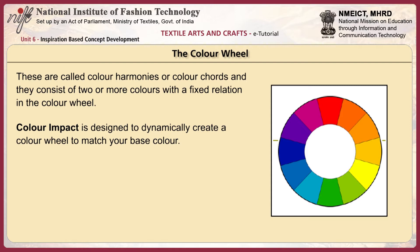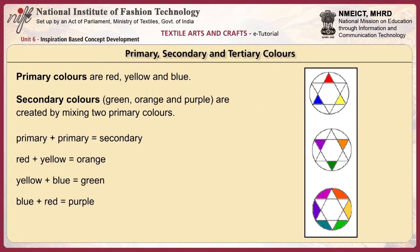Color impact is designed to dynamically create a color wheel to match your base color. Primary colors are red, yellow and blue. Secondary colors are created by mixing two primary colors: orange, green and purple. Red plus yellow gives orange, yellow and blue equal green, and blue and red give purple.